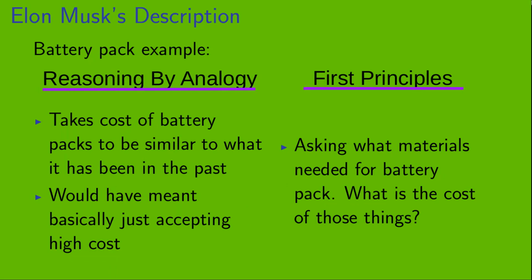Slightly more explicitly for the battery pack example, reasoning by analogy would have meant basically taking the cost of battery packs to be very similar to what they had been in the past. So, this would have meant just accepting the high cost. On the other hand, the first principles approach means asking what materials are needed for the battery pack, and what is the cost of those things.